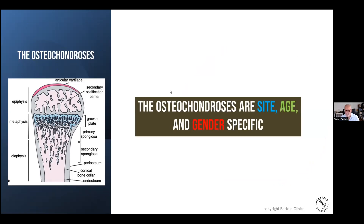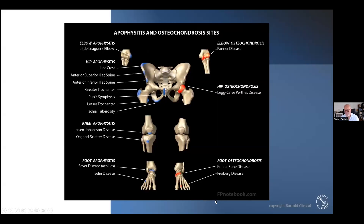They're site, age, and gender specific. And when you have a look at them, they can be anywhere from the upper body right down to things like the head of the second metatarsal. But one of the important things to note here is the vast majority of them are in the lower limb — so there's a lot down here.